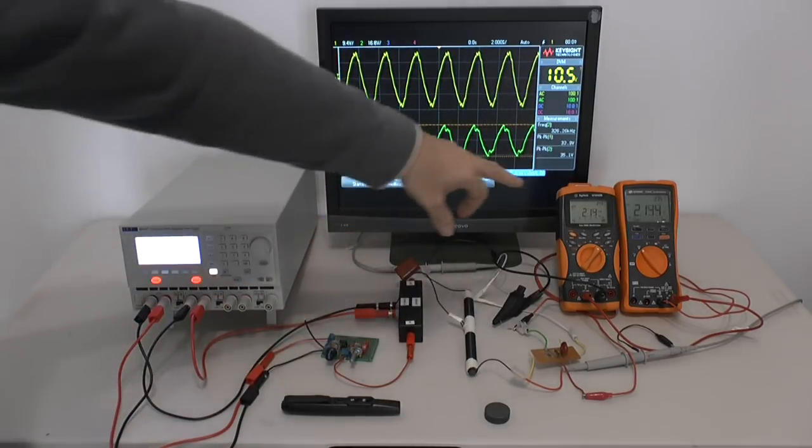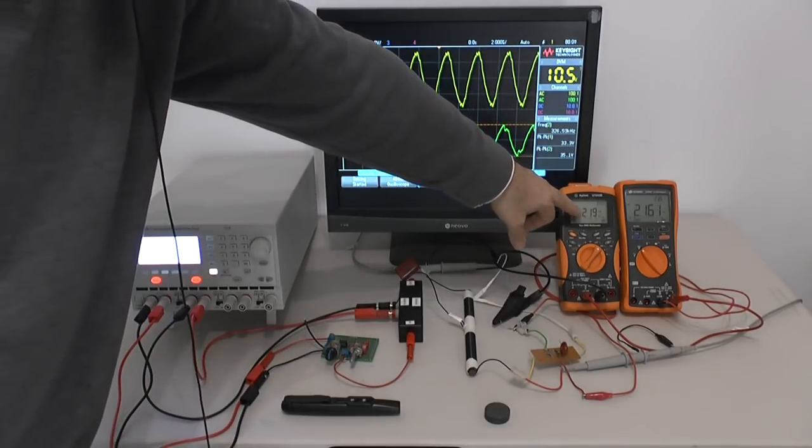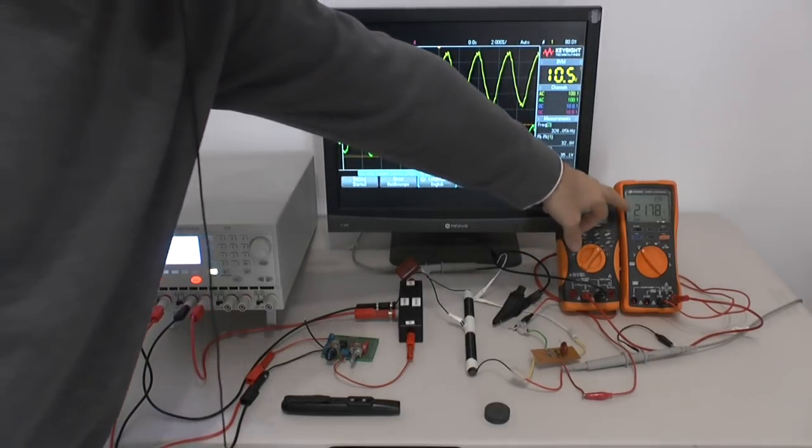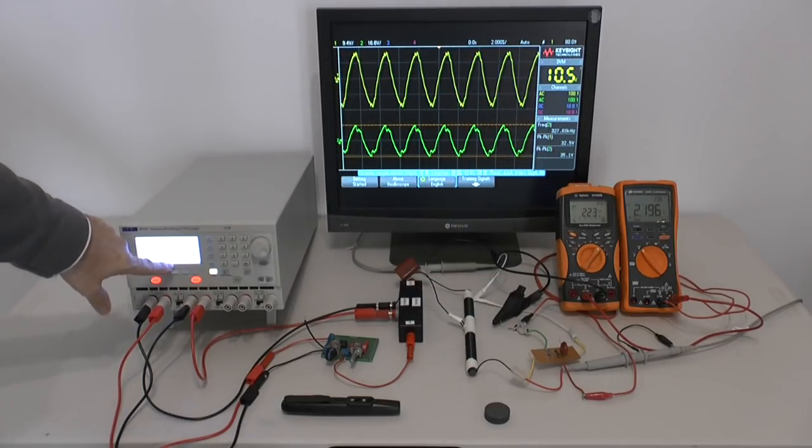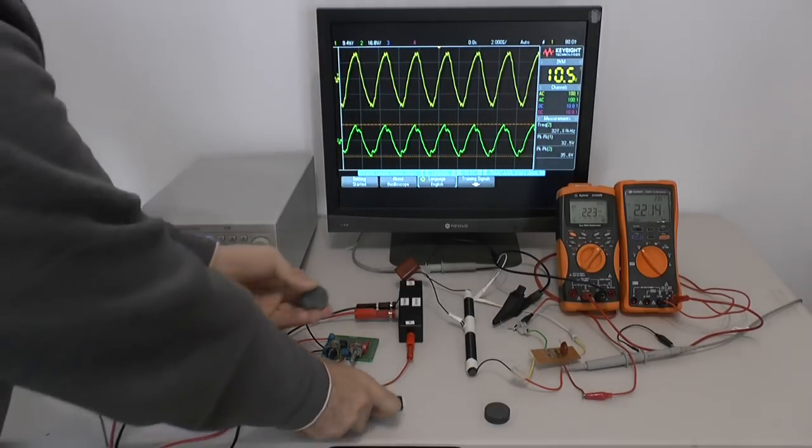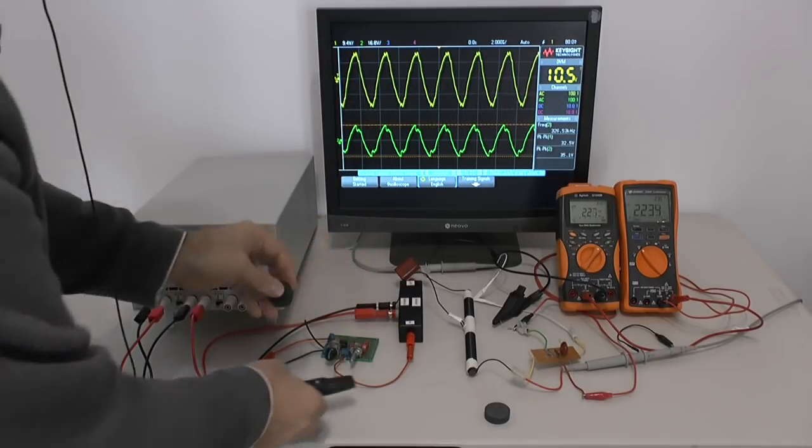You see it's only small change from 2.19 to 1.9 and here from 2.1 volts to 1.9 volts. However from 21 milliampere I go down to 7 milliampere. Now let's see, that was north side. Now let me connect the south side.